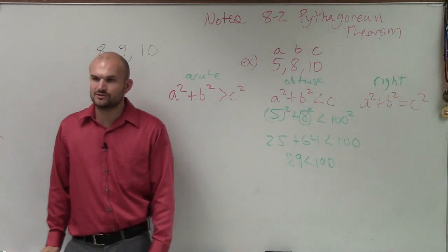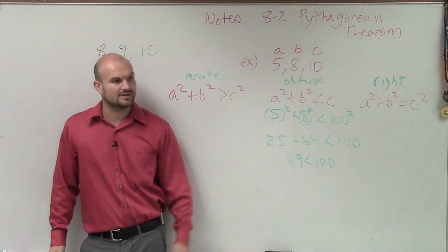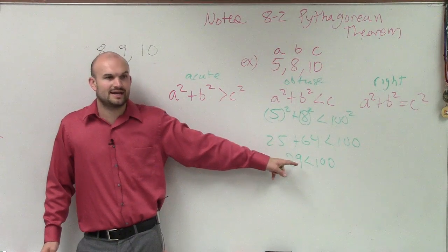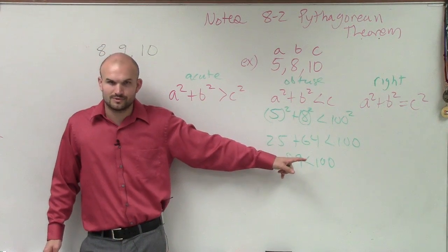So therefore, what type of triangle do we have? Obtuse. And you can see that works: 89 is less than 100. That's true.